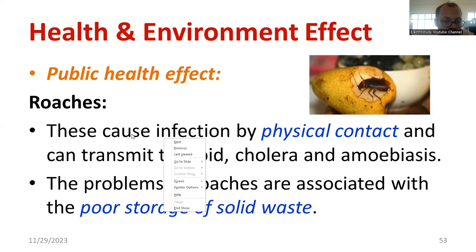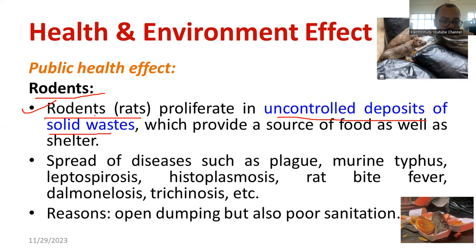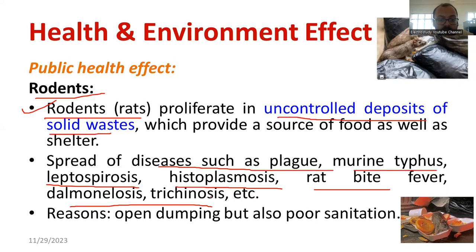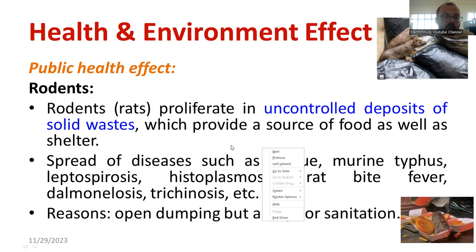Regarding rodents — all rodents fall under this category. The spreading of rodents is because of uncontrolled deposits of solid waste. Diseases spread by rodents include plague, urine typhus, leptospirosis, histoplasmosis, rat bite fever, and trichinosis. The main reason for the spreading of rodents is open dumping and poor sanitation. For example, food particles left on a table attract rodents, which then multiply, and this happens because of poor management of waste.